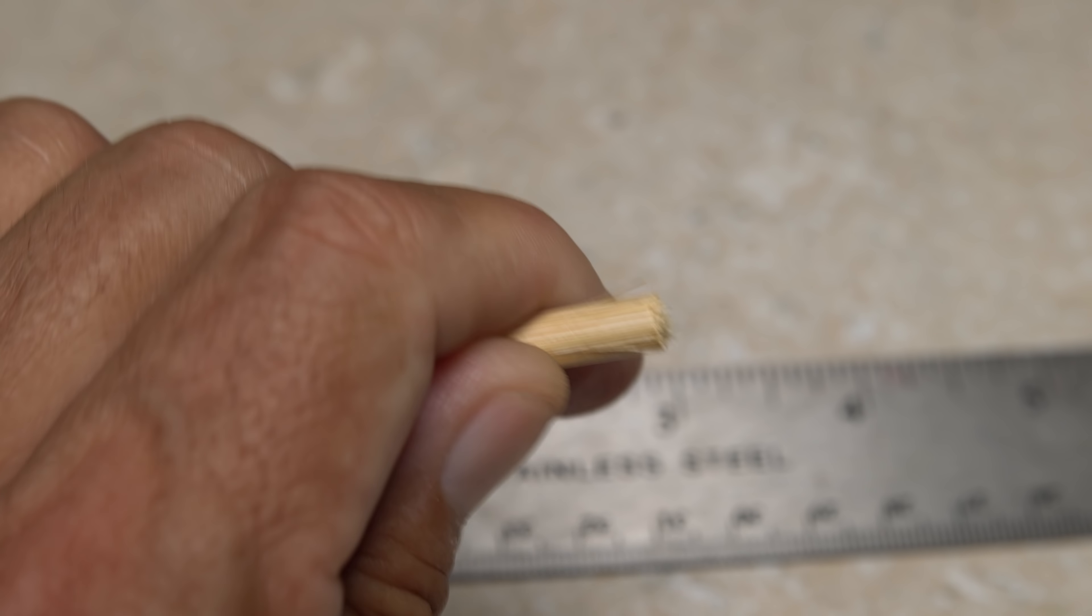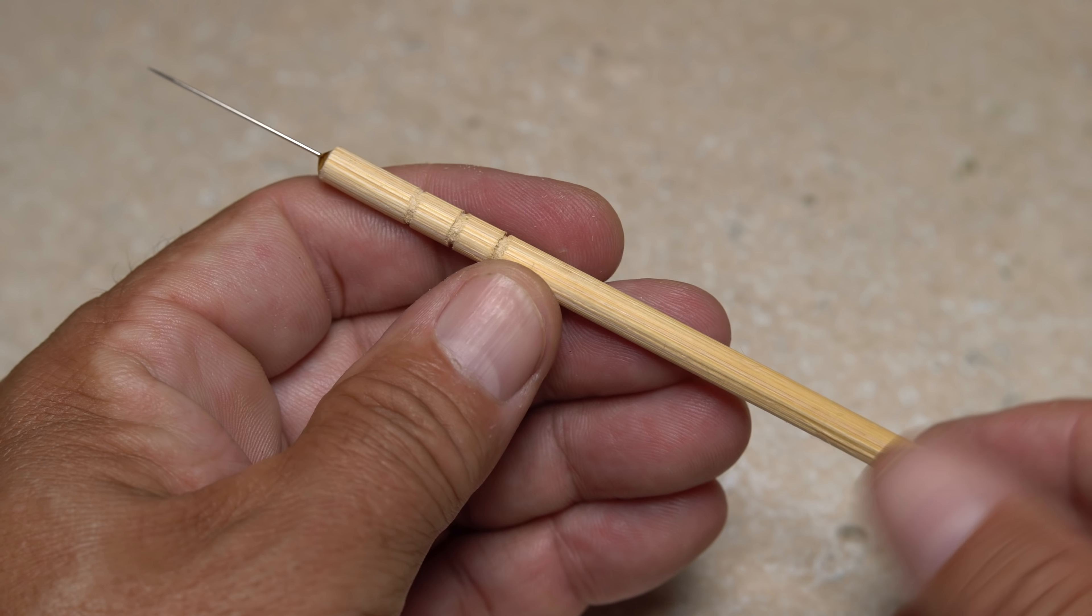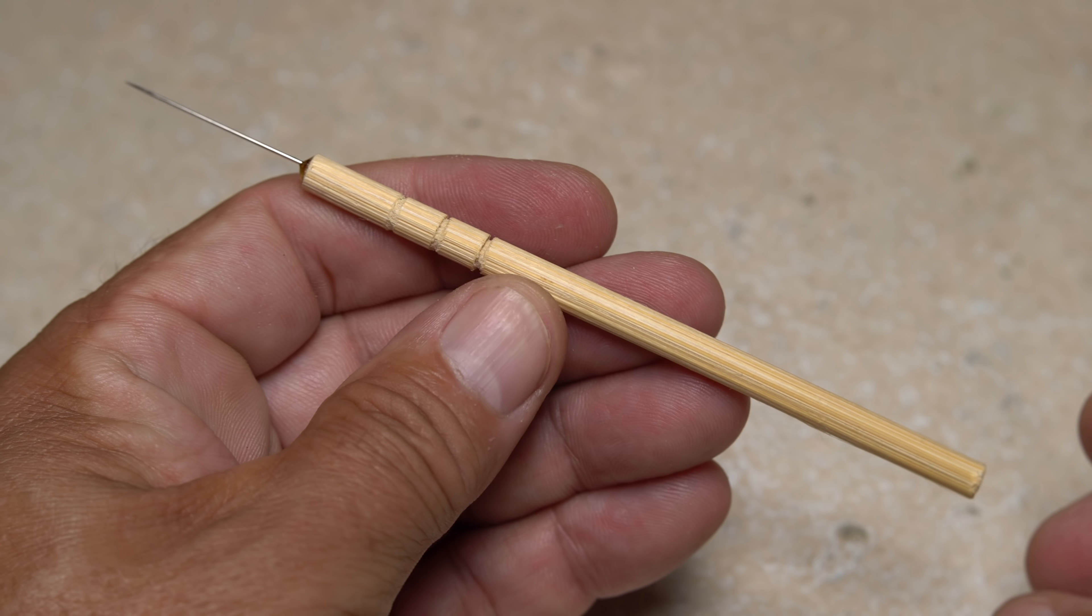A regular fingernail file can be used to round off and clean up any rough edges. Congratulations, you've just made one of the cheapest, best fly tying tools you can own.